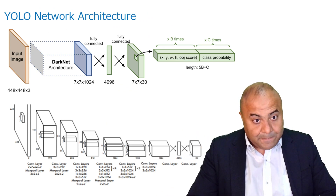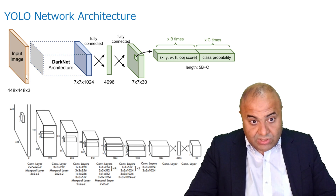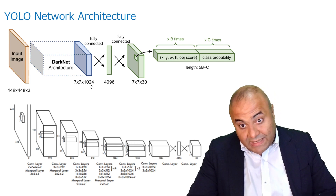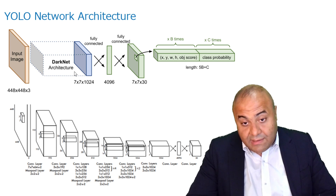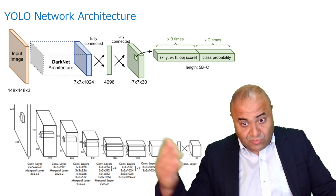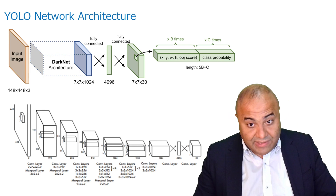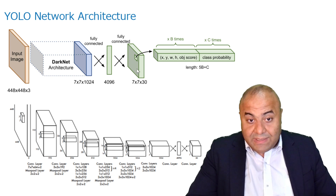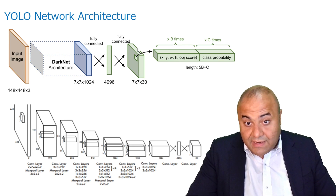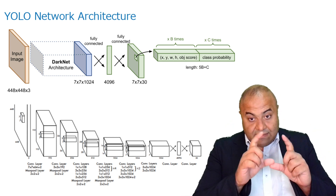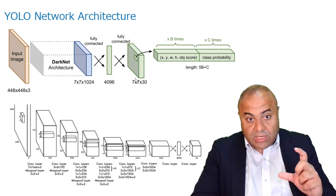In reality, the network looks like this: we have an input image, then an architecture consisting of a series of convolution layers and max pooling layers. This was previously called DarkNet, but now we have many versions of YOLO — versions 1, 2, 3, 4, and at the time of this video, already version 8. After these convolutions, we get a feature grid.